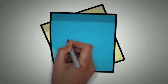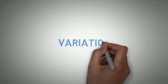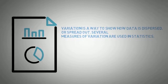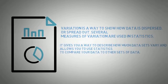Let's see about variations in statistics. Basically, what is a variation? It is a way to show how data is dispersed or spread out. It gives you a way to describe how much data sets vary, and allows you to use statistics to compare your data to other sets of data. There are several measures of variation.